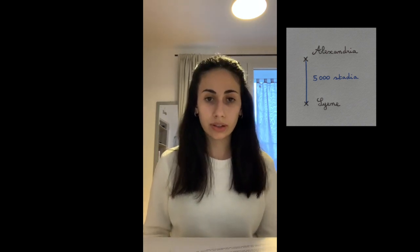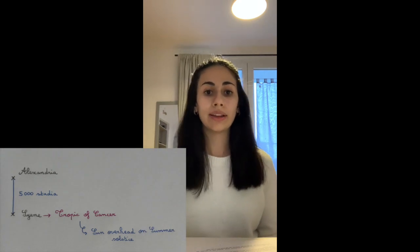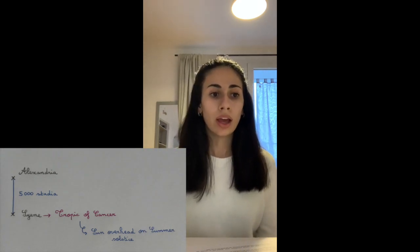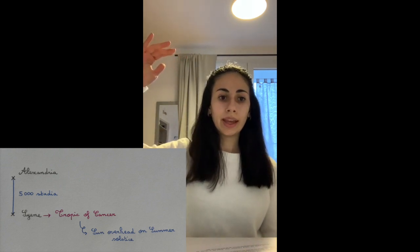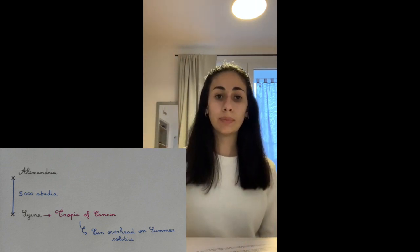Eratosthenes was a Greek mathematician and was known as the father of geography. To calculate the circumference of the Earth, he assumed that Alexandria, the city he was in, was 5,000 stadia directly north of the city of Syene. He also knew that Syene was on the Tropic of Cancer, and that at noon on the summer solstice, the sun is directly overhead, meaning that a vertical pole in Syene would not cast a shadow.